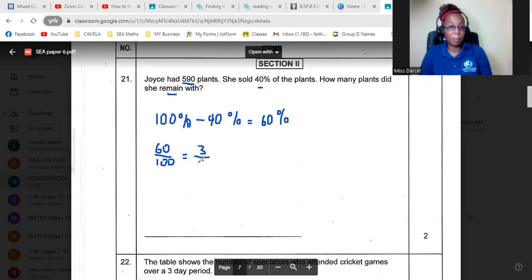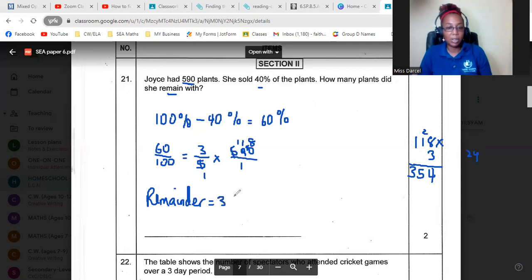So 60% is the same as three fifths. So that's a good shortcut to remember. Three fifths of 590. 5 into 590 is 118. Then we have 118 times 3. 8 times 3 is 24. 1 times 3 is 3 plus 2 is 5. 3 times 1 is 3. So the remainder 354.